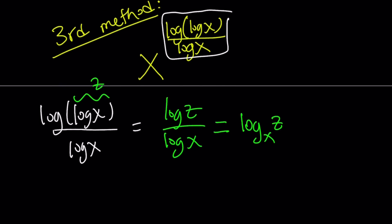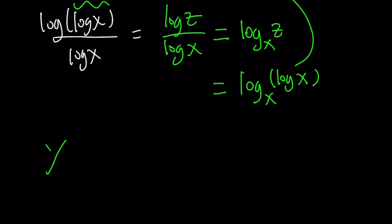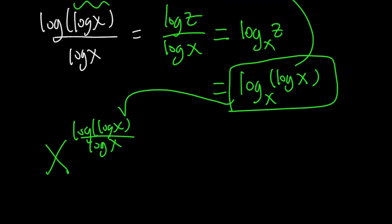But what is z? z is log x. So we can kind of replace z with log x, right? So this is our exponent, remember. We're going to put it back here. Remember that was the exponent. So x to the power log log x over log x. This is log log x over log x. So we're going to replace the exponent with x to the power log of log x with base x. And remember the bases rule.